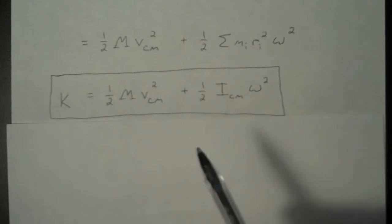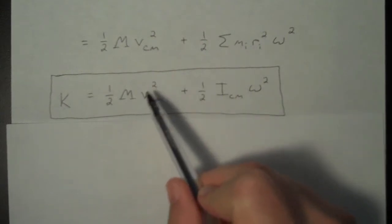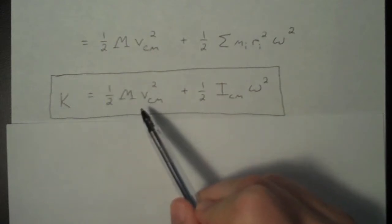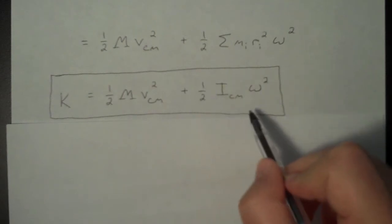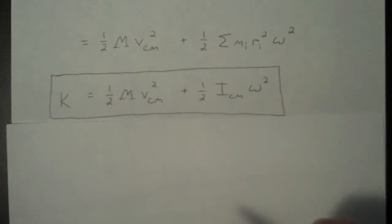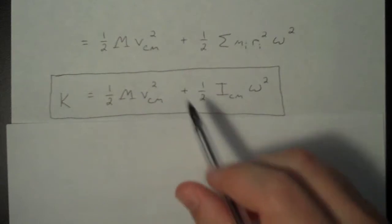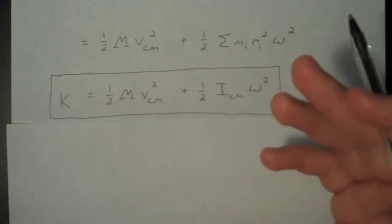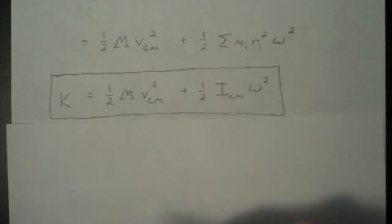Essentially what you are doing is you are adding the kinetic energy associated with the overall motion of the rigid body, and then you are adding it to whatever rotational motion is occurring around the center of mass. So that cm indicates center of mass.